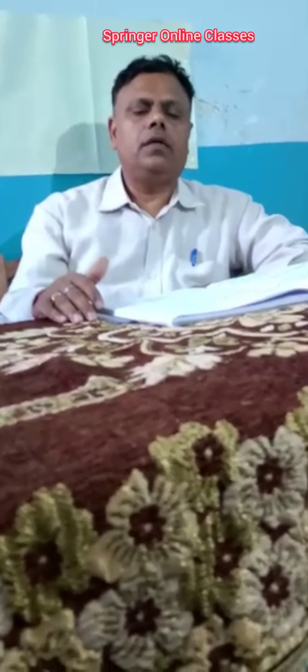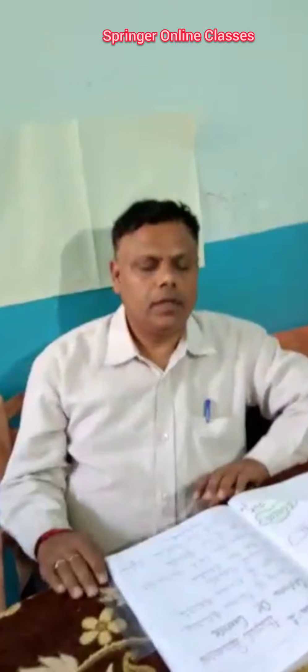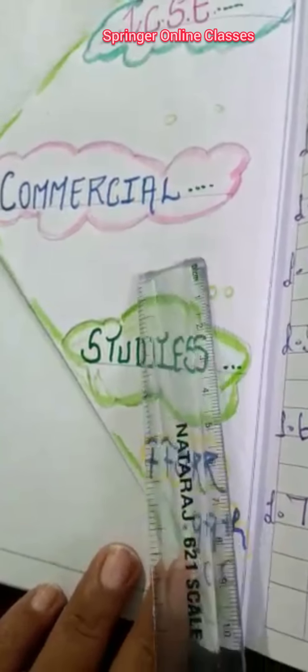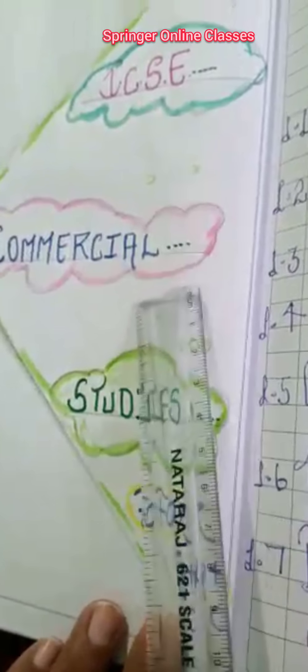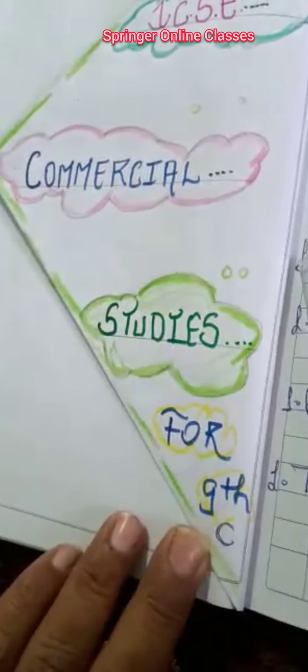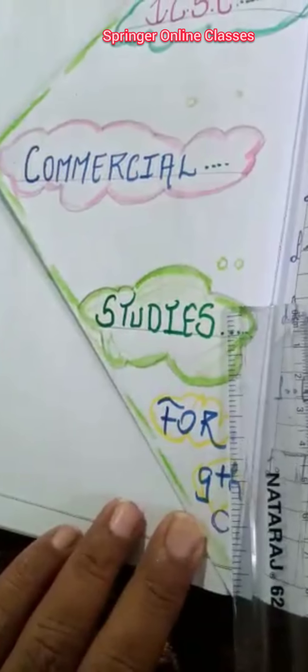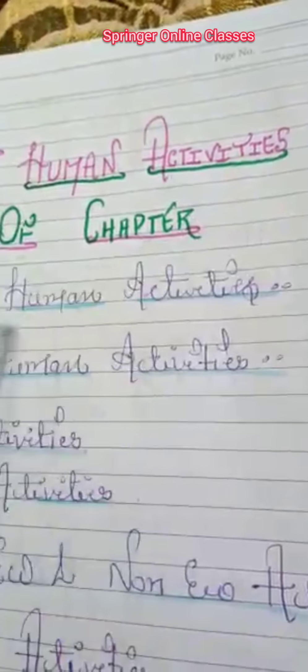Let us begin with the first chapter, Human Activities. In I.S.C.S.C. Commercial Studies for Class 9th, this subject contains two sections. One is Commercial Studies, related to Commerce, and the second one is related to Accounts. This chapter relates to Commerce and the name of the chapter is Human Activities.